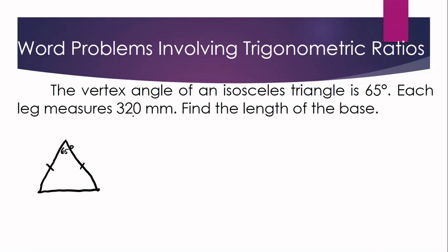The given is that each leg measures 320 millimeters, so this leg is 320 millimeters and this one is also 320 millimeters. The question asks us to find the length of the base, which we will denote as x. So x is our unknown — the length of the base.